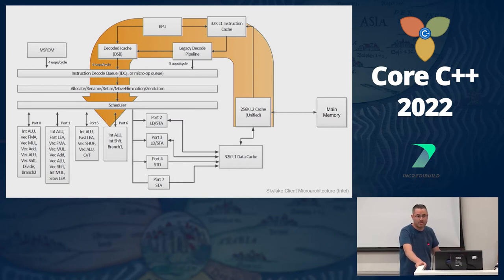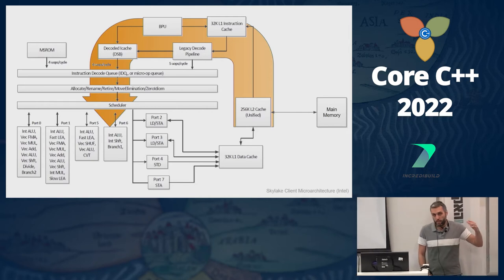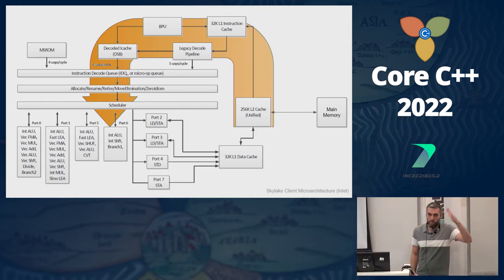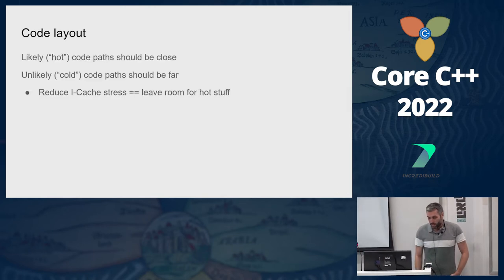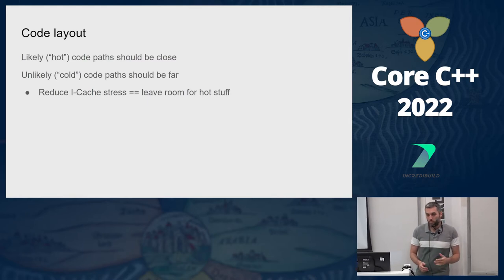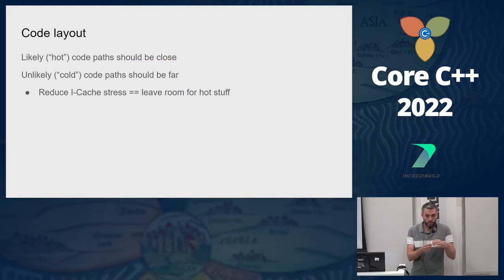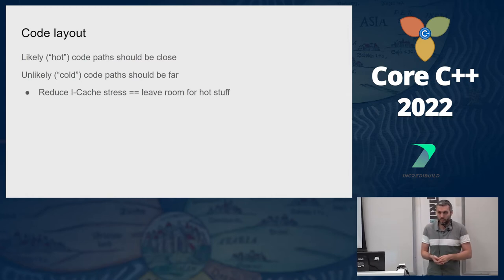When one instruction is progressing through the next pipeline stage, you want to push the next instruction into the first step — always keep pushing them inside. Mainly, this helps bring instructions earlier from main memory, because main memory is far. It's like going to the public library to get a book — you have to plan to drive there and do it as early as possible. Basically, likely/hot code paths you want close together, and cold code paths far away so they don't take up space for the hot paths.